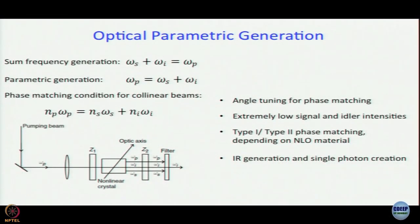The different points that one needs to keep in mind during optical parametric generation is that one can do angle tuning to get phase matching. The signal and idler intensities are very very low because splitting a photon is less probable than combining two photons. You can get type one or type two phase matching depending on the NLO material, and this is very useful for IR generation and single photon creation. The problem is extremely low signal and idler intensities.